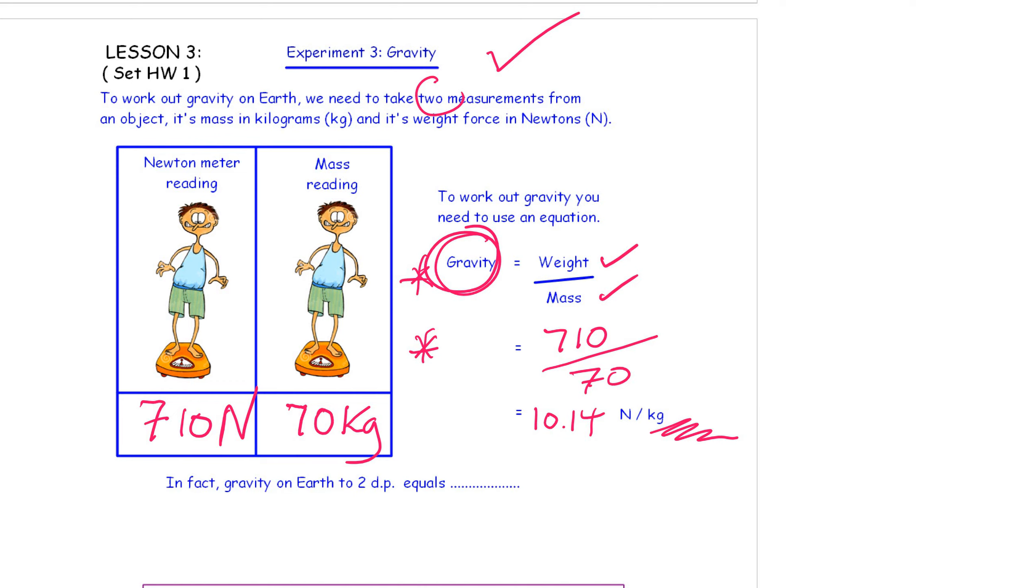Now, in actual fact, gravity on Earth has been worked out much more accurately and precisely. And it actually equals 9.81 Newtons of weight force per kilogram. So I was slightly out there.